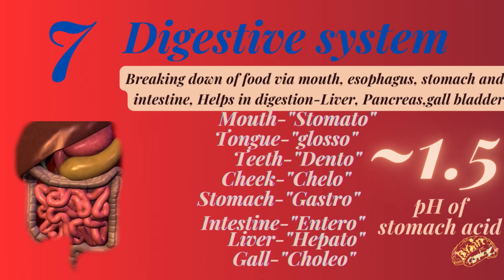Number seven: the digestive system. It involves breaking down of food via mouth, esophagus, stomach, and intestine. Other organs that help in digestion are liver, pancreas, and gallbladder. Medical terms: mouth is 'stomato', tongue is 'glosso', stomach is 'gastro', teeth is 'dento', cheek is 'chelo', liver is 'hepato', intestine is 'entero', and gall is 'choleo'. The pH of stomach acid is approximately 1.5.